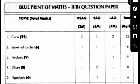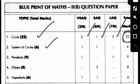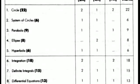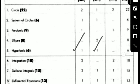Let us see the weightage first. This is the blueprint of the Maths 2B question paper. From the topic Circles, the weightage is 2 two-mark questions and 1 four-mark question, and 2 essay questions - total weightage equals 22 marks. The second topic, System of Circles, the weightage is 1 two-mark question and 1 four-mark question - total equals 6 marks. Third topic Parabola: 1 two-mark question and 1 essay question - total 9 marks. From the Ellipse topic, weightage is 2 four-mark questions - total equals 8 marks. From the Hyperbola topic, weightage is 1 two-mark question and 1 four-mark question - total equals 6 marks.